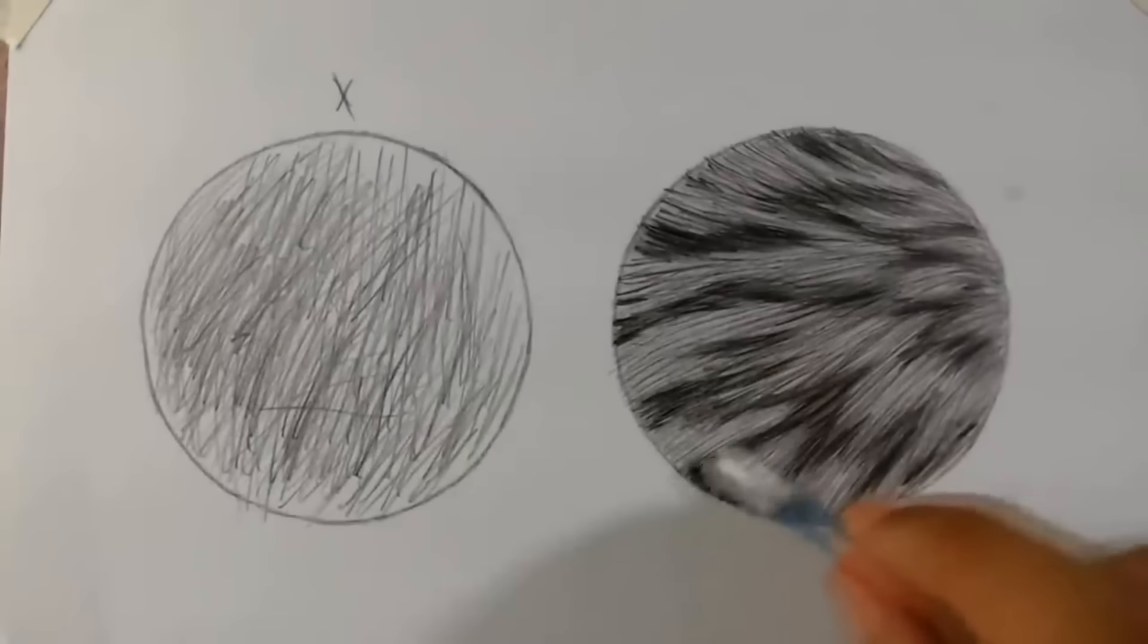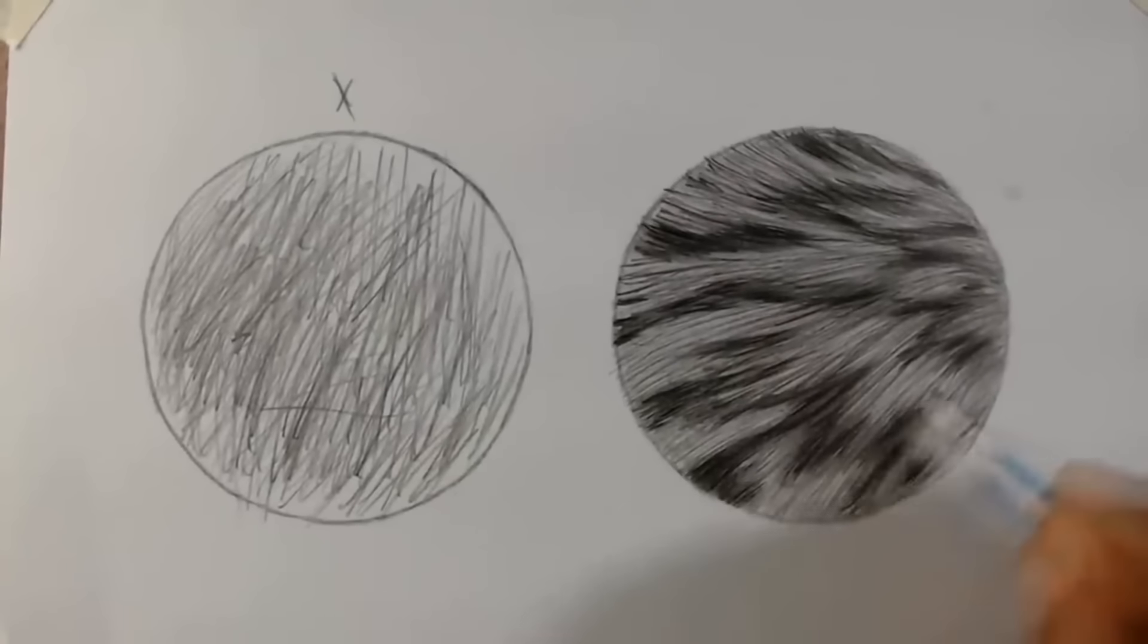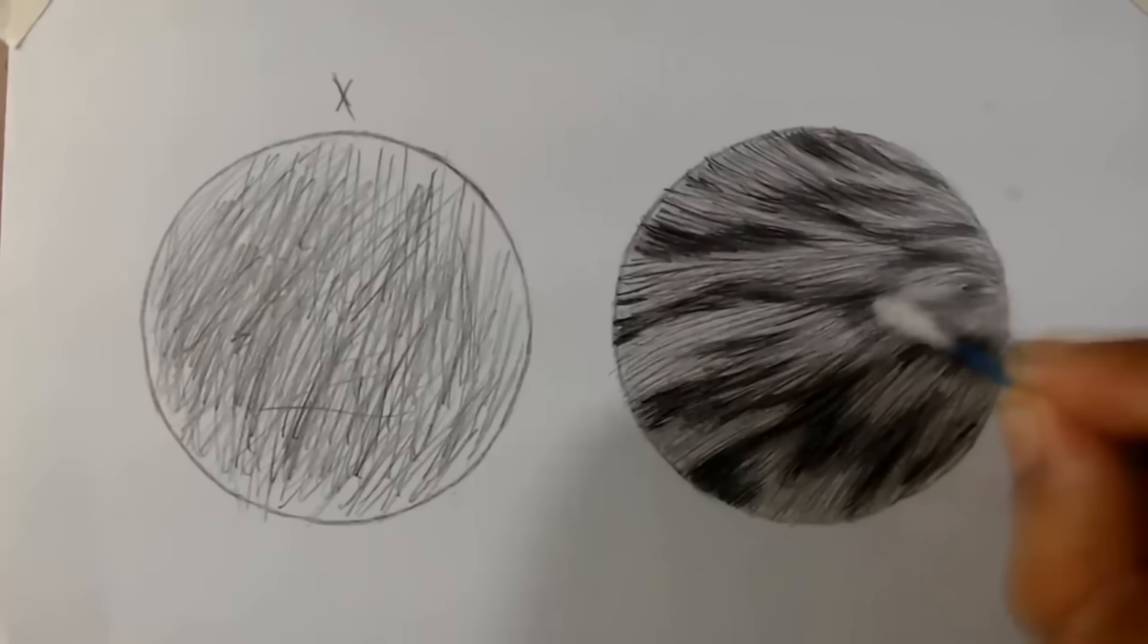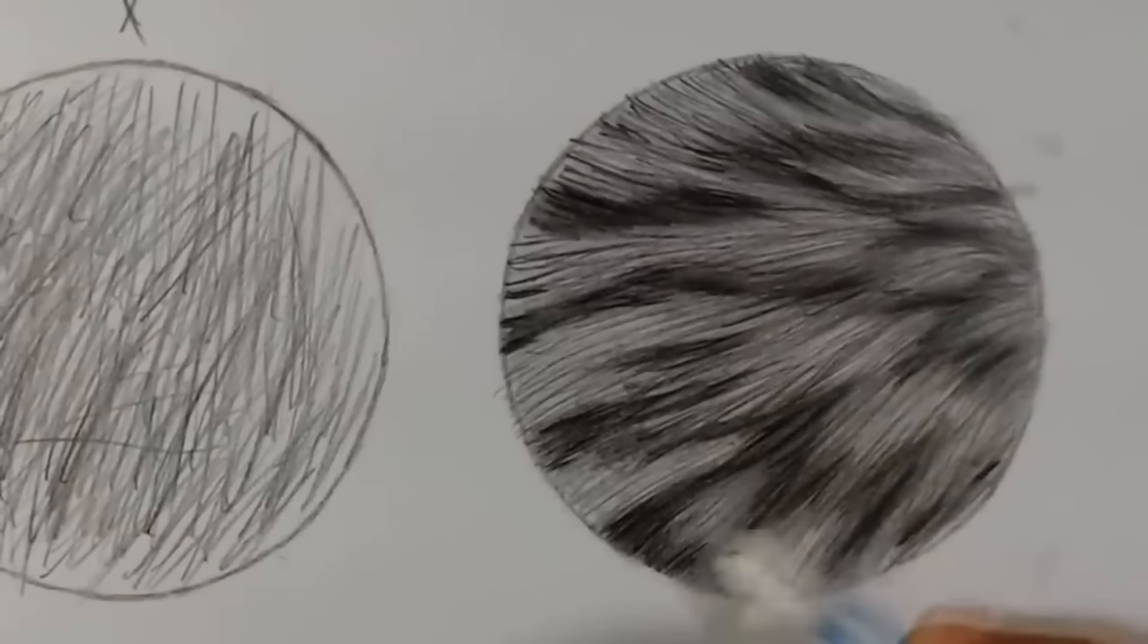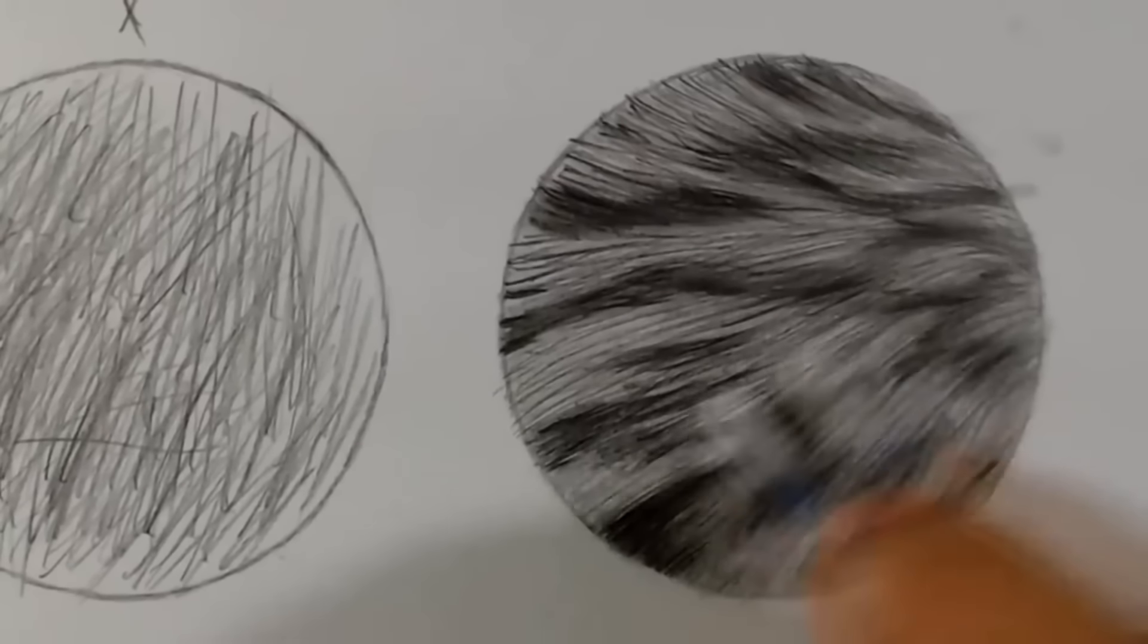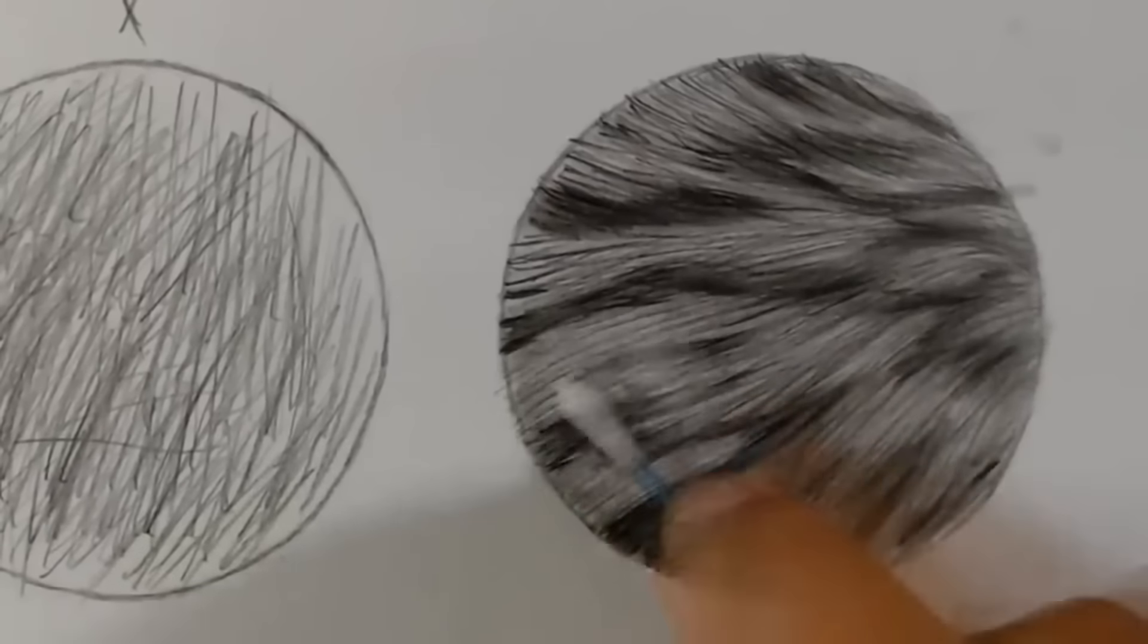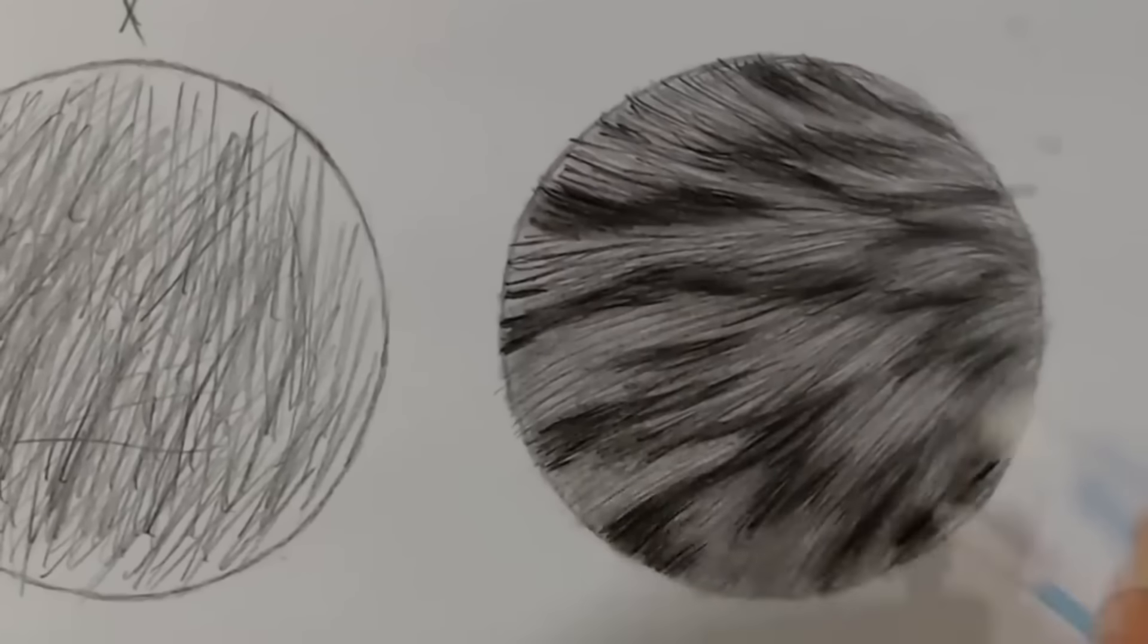Alright, after doing that, now we'll apply the last layer using the cotton swab over the light details. Remember to press lightly. We're only doing it to bring a layer and this fur texture should not fade much.